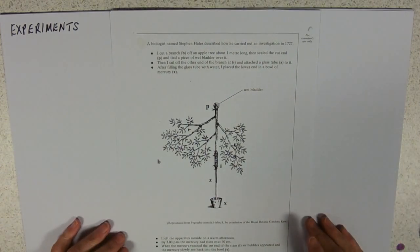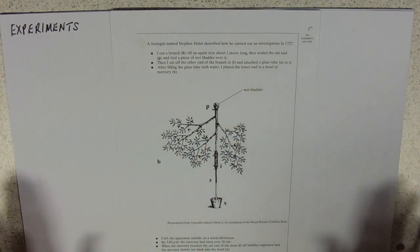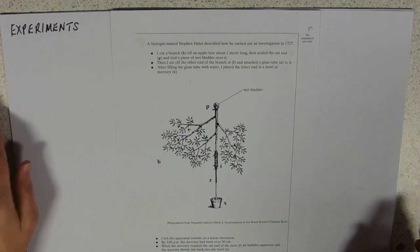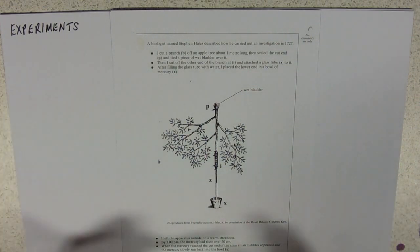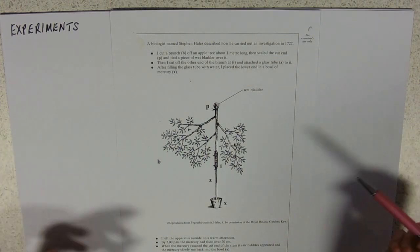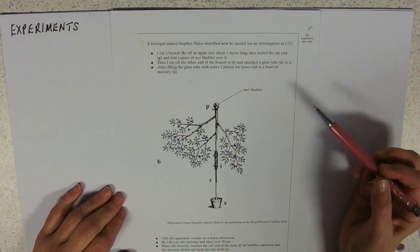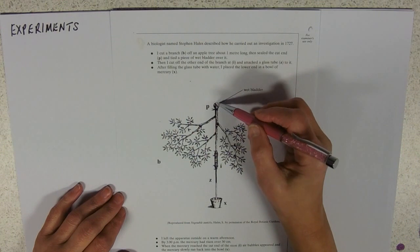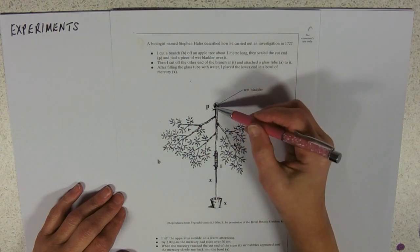So, this is a description of an experiment from 1727. This is how we've managed to build up so much evidence. And this guy, Stephen Hales, cut a branch off a tree about a metre long and sealed the cut end and put a wet bladder over it.